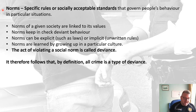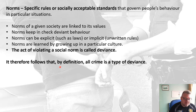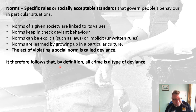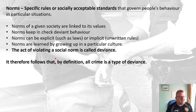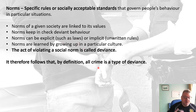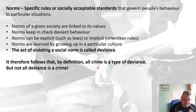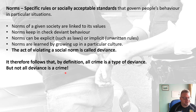By definition, all crime is deviant. It doesn't mean that as a society we see all crime as being deviant, but by definition crime has to be deviant because it is violating a social norm — specifically an explicit social norm, a law. So by definition all crime is deviant, but not all deviance is crime. If I was answering a question on crime and deviance, I'd make sure to get those two points into any answer.